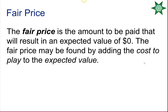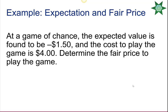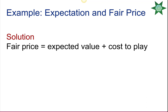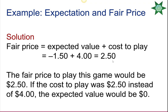The fair ticket price is the amount to be paid that results in an expected value of zero, and it's found by adding the cost to play to the expected value. For example, if the expected value was −$1.50 and the cost to play was $4, the fair ticket price would be −$1.50 + $4 = $2.50, which would result in an expected value of zero.